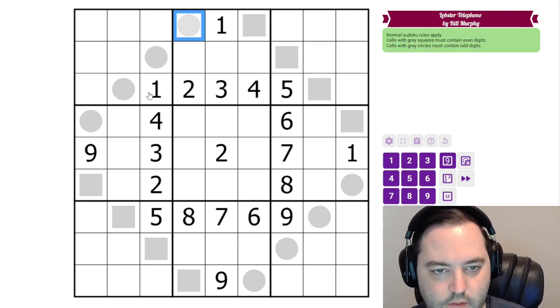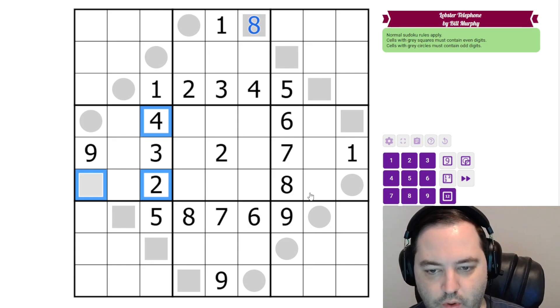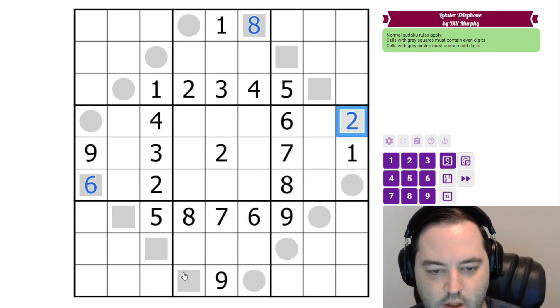We are going to start with some of the even digits because we can just fill them in. This even cell sees two, four, and six, so this must be an eight. This one sees two, four, and eight, so it must be a six. This one sees four, six, and eight, so this is a two. And this one sees two, six, and eight, so it's four.